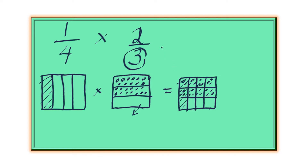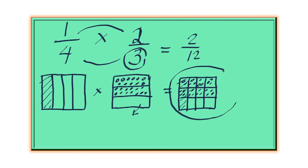Now, if we do this multiplication of 1 fourth and 2 thirds using the standard rule — top to top — that's 2 over 12. Where is this 2 over 12 in this picture? Do you see the 2 over 12? Let's start at the bottom. Where are the 12 sections? Let's count how many squares in total are there in this square.